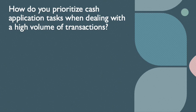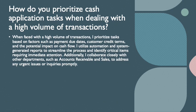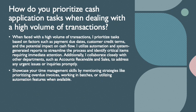The next question is: how do you prioritize cash application tasks when dealing with a high volume of transactions? When faced with a high volume of transactions, I prioritize tasks based on factors such as payment due dates, customer credit terms, and potential impact on cash flow. I utilize automation and system-generated reports to streamline the process and identify critical items requiring immediate attention. Additionally, I collaborate closely with other departments such as accounts receivable and sales to address any urgent issues or inquiries promptly. Showcase your time management skills by mentioning strategies like prioritizing overdue invoices, working in batches, or utilizing automation features when available.